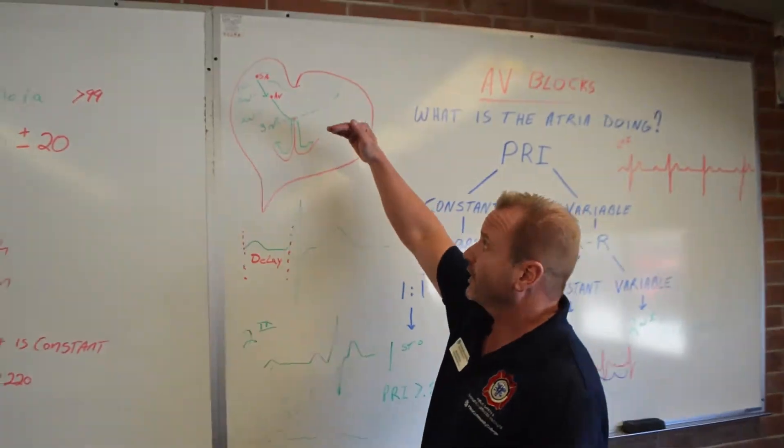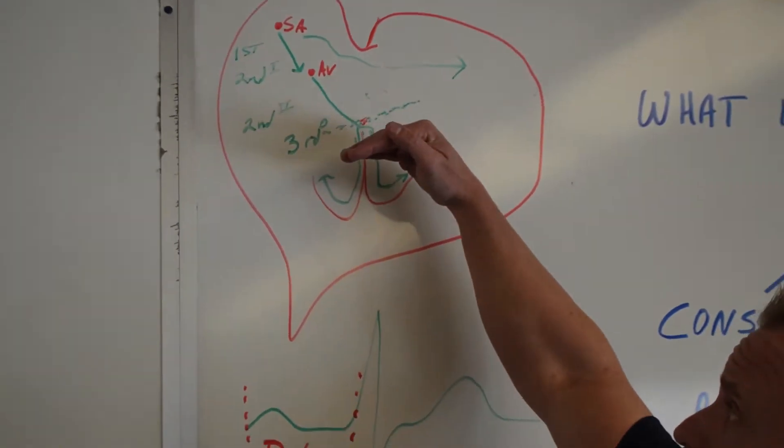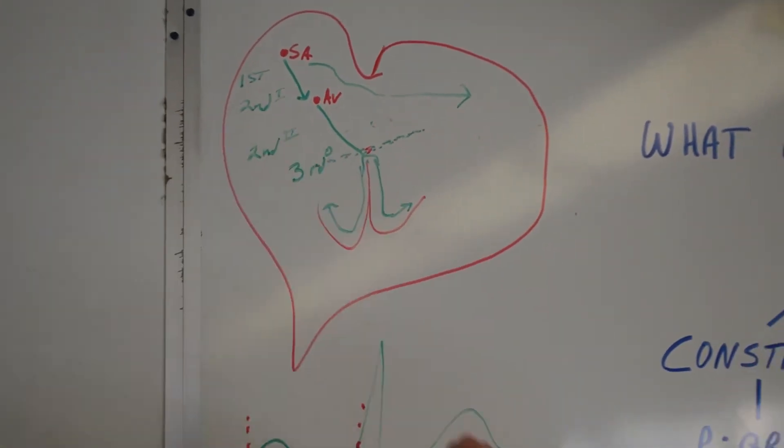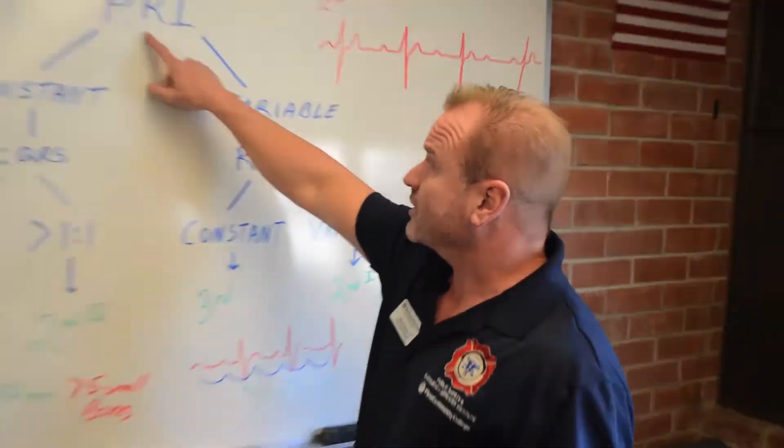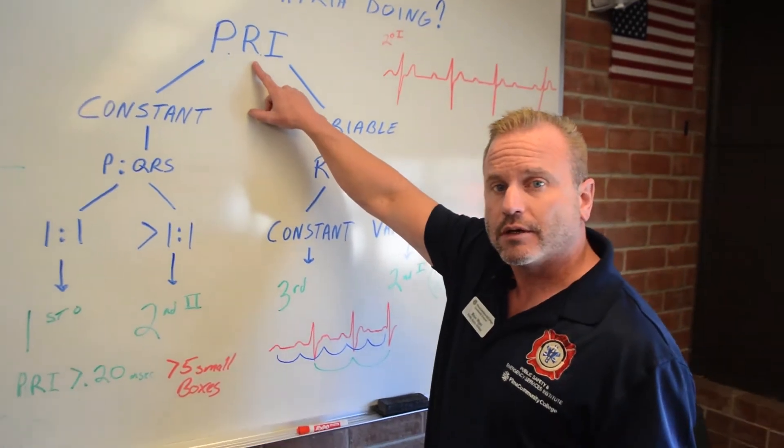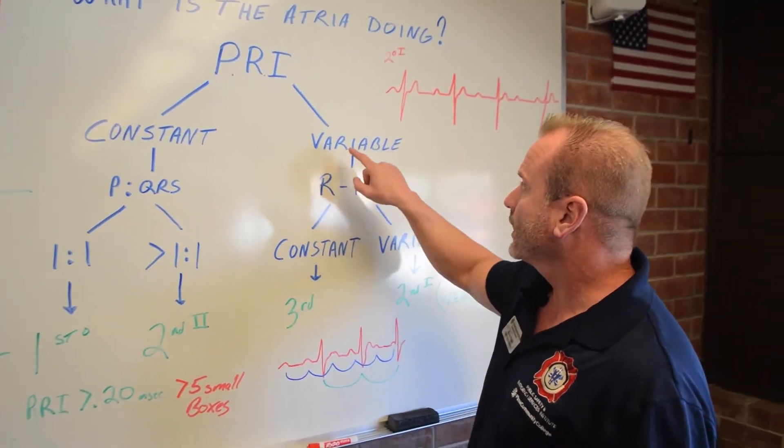So that was the first degree block. Now we're going to go over in the severity of AV blocks in our treatment. We're going to go to second degree type one, which is our Wenckebach. So I ask myself again, what's the atria doing? What's my PR interval?